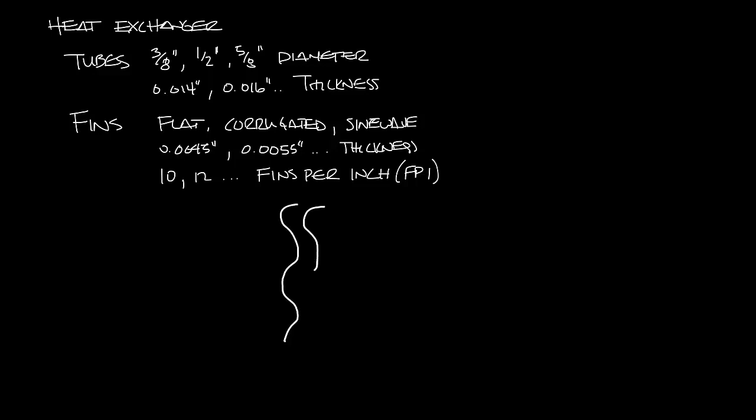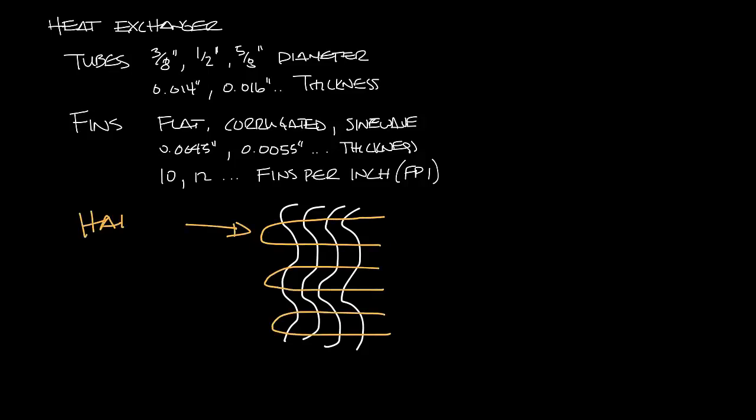So let me draw the fins. I am not so great at drawing sine waves apparently, but let's say these are fins in a water coil. The copper tubes are bent into hair pins and inserted through the fins, and then each hair pin is connected on the opposite side with a return bend that's welded on so that you get continuous flow of water through the tubes.